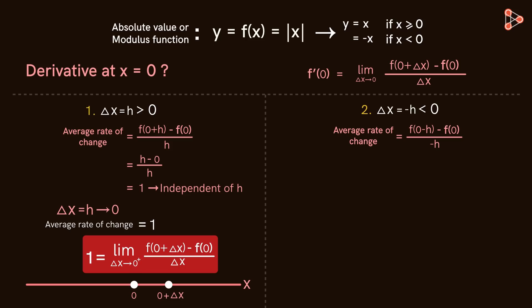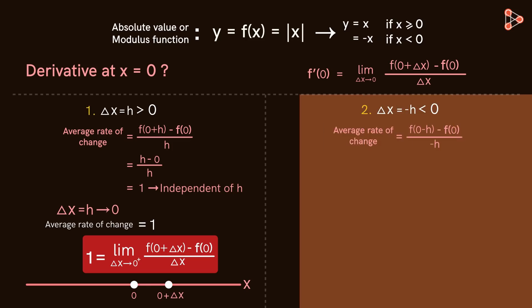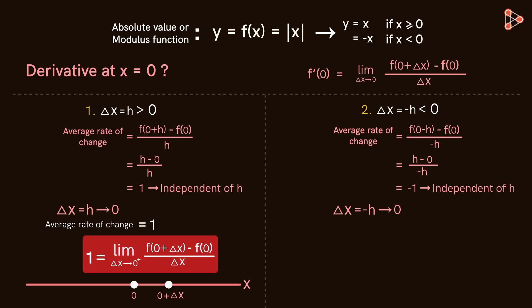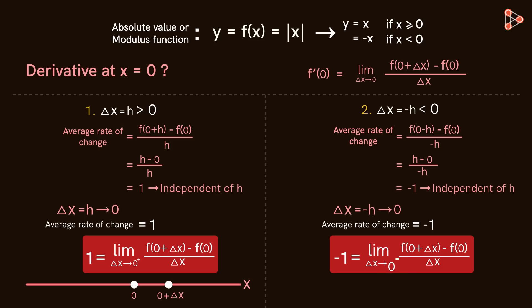The plus symbol means we are finding the average rate between zero and the values of X greater than zero. Now let's consider the second case, where delta X is equal to negative H. So the denominator of this ratio will be equal to negative H. Now since zero minus H will be less than zero, we get f of zero minus H as negative of zero minus H, which is H. So after simplification, we get the average rate of change as negative one. So as delta X tends to zero, this ratio is always equal to negative one. We say that as the limit delta X tends to zero minus, the average rate of change approaches negative one. The minus indicates that we are finding the average rate between zero and the values of X less than zero.